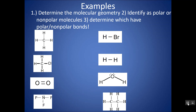Take a minute, pause the video, and check your work. So this first structure — carbon has one, two, three, four domains, and they are all bonds, no lone pairs. So this would be tetrahedral. Tetrahedral with four bonds is always going to be nonpolar as long as it's surrounded by all the same atom. And it is, so this is a nonpolar molecule. If I look at it, it looks symmetrical — symmetrical is nonpolar, asymmetrical is polar.